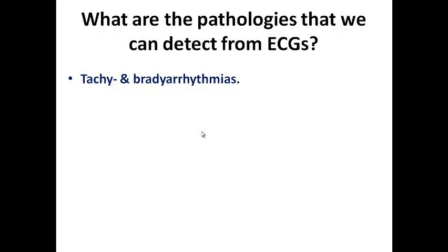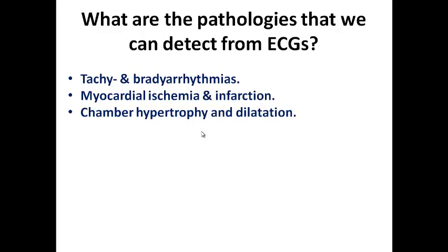The second use is detecting myocardial ischemia and infarction. Any patient with chest pain, even if considered atypical, needs an ECG because it can direct us toward urgent admission, going directly to the cath lab, or giving thrombolytics according to the setting available. Third, ECG can give an idea about chamber hypertrophy and dilatation — atrial enlargement and ventricular hypertrophy — as will be covered in subsequent lectures. It can also help diagnose pericarditis from ECG features.